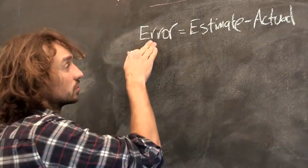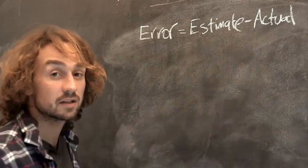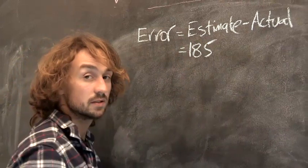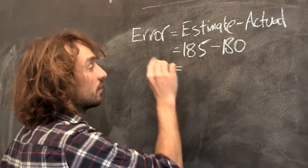So the first thing when you calculate percentage error you find the error. So you take your estimate and you take away the actual height. So let's say you estimated I was 185 centimetres. But actually I'm 180. So that means that your error is 5.